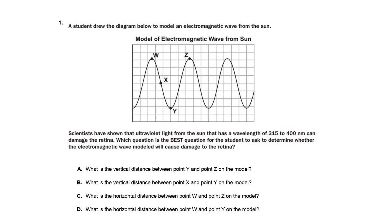Starting with problem number one: a student drew a diagram to model an electromagnetic wave from the sun. Scientists have shown that ultraviolet light from the sun with a wavelength of 315 to 400 nanometers can damage the retina. That range means it has a higher frequency. The question asks what is the best question for the student to ask to determine whether the wave model will cause damage to the retina.